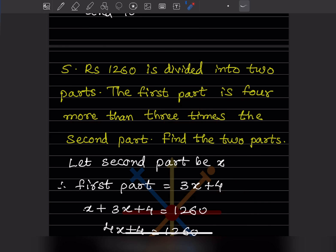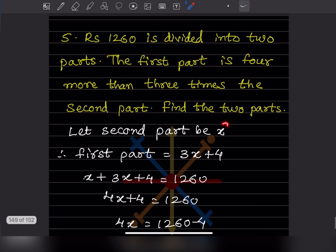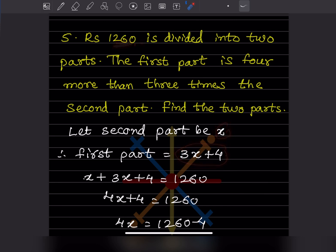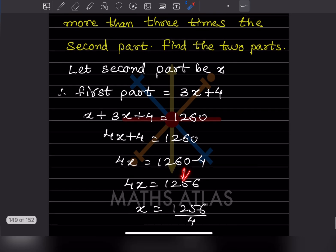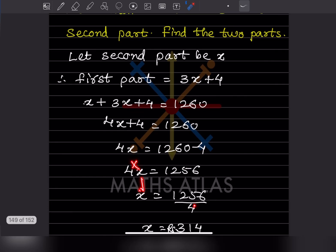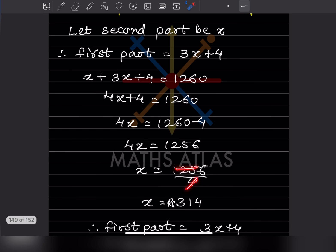Adding both parts and setting equal to 1260: x + 3x + 4 = 1260, which gives 4x + 4 = 1260. Moving +4 to the right: 4x = 1256. Dividing by 4: x = 314. So the second part is Rs. 314.